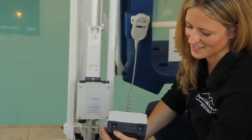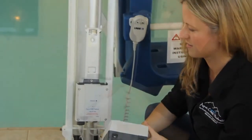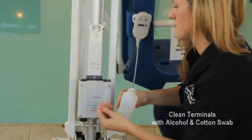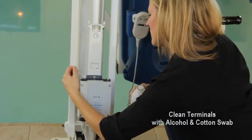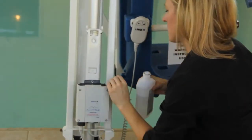If your lift is still not working, check the battery and control box terminals for any corrosion. If needed, you can clean terminals with an alcohol wipe or a cotton swab with alcohol.